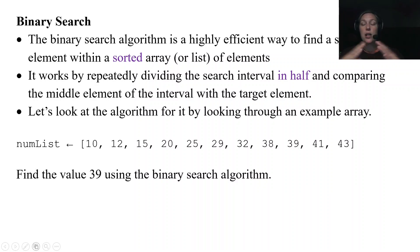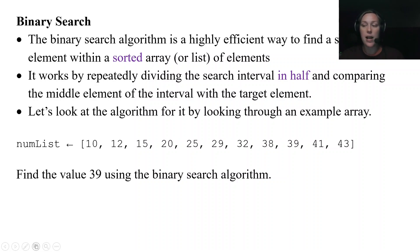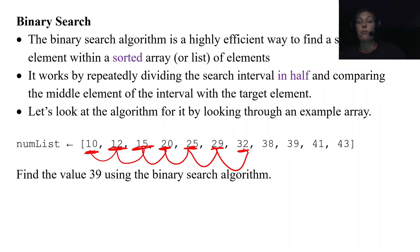Here is numList — I made it big so we can get a good idea of what this is going to look like. Notice it's a sorted list of numbers. If we were dealing with strings we'd need alphabetical order; with numbers it's numerical order. We're going to go through the algorithm by finding the value 39 using the binary search. With a linear search we'd have to check: is it 10? No. Is it 12? No. Is it 15? — going one by one, not skipping any elements until we reach 39. Binary search is going to be different.